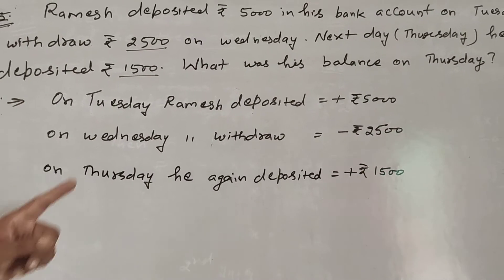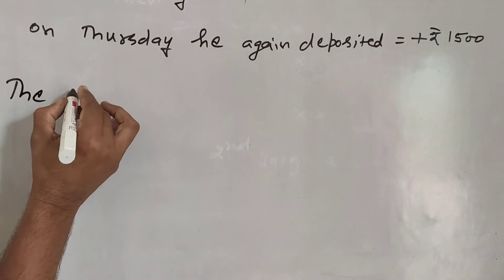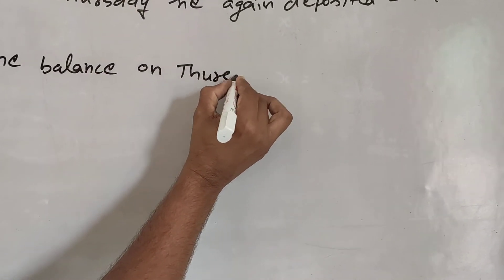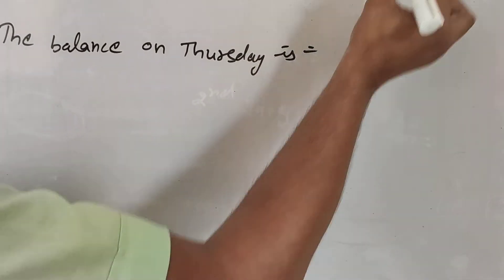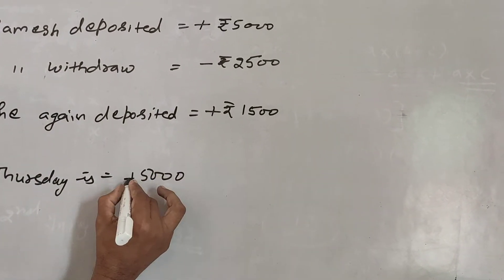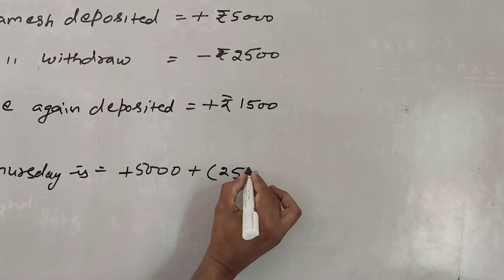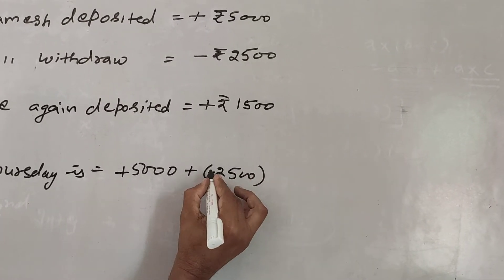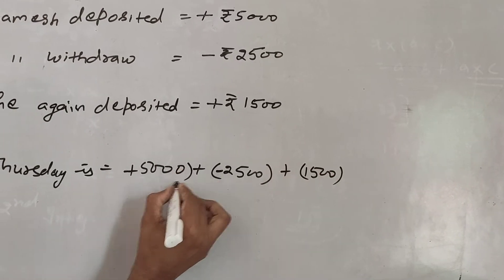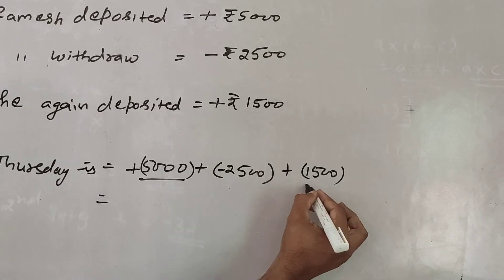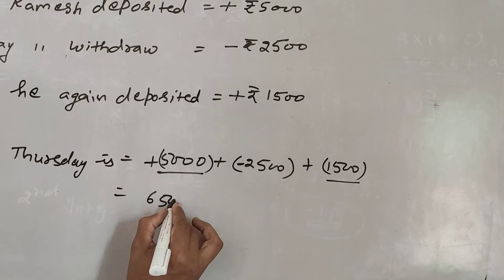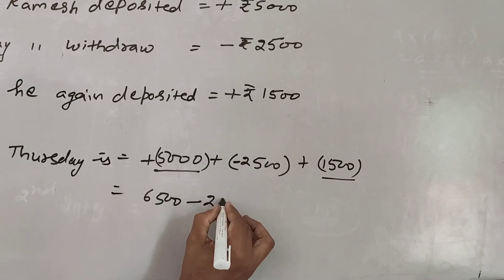What is the balance on Thursday? The balance on Thursday is 5,000 plus minus 2,500 plus 1,500. That's 5,000 plus 1,500 minus 2,500.